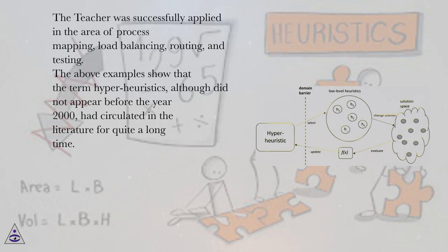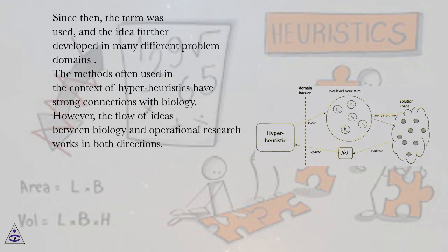The above examples show that the term hyper-heuristics, although it did not appear before the year 2000, had circulated in the literature for quite a long time. Since then, the term was used, and the idea further developed in many different problem domains.